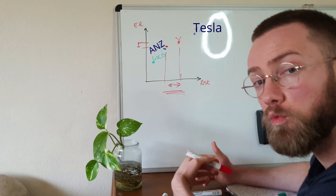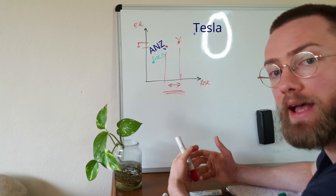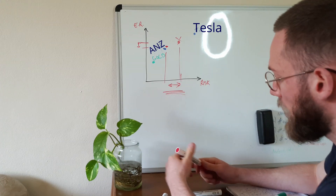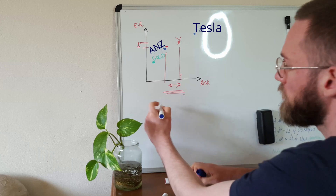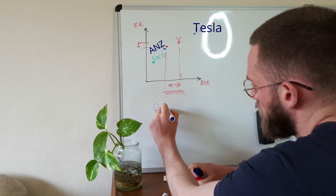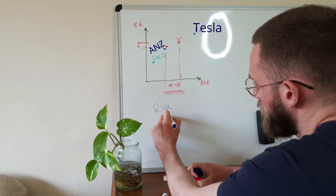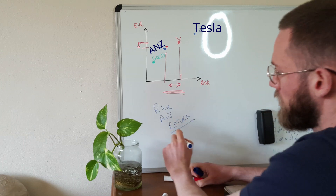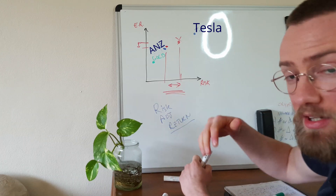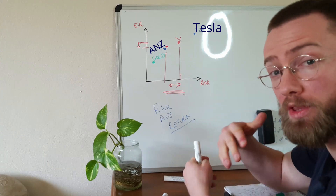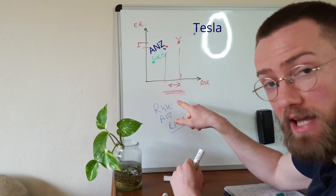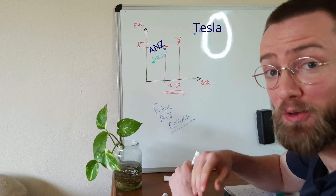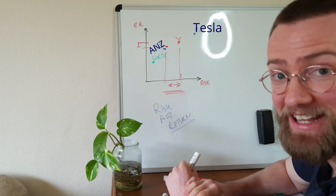This is why having different asset class allocations in our portfolio actually improves our risk-adjusted return. The returns we're getting relative to the risk we're taking is much greater than if we were to put all of our money into something like Tesla alone.